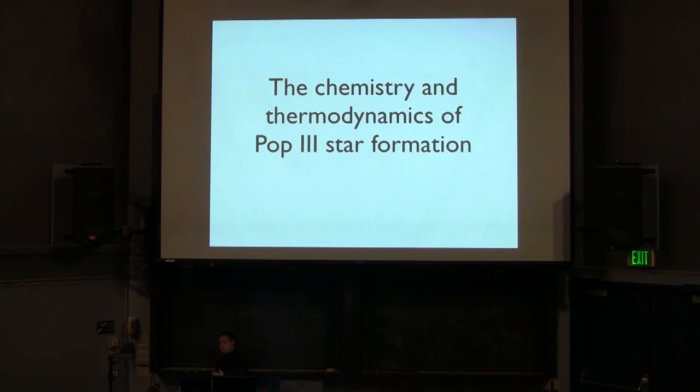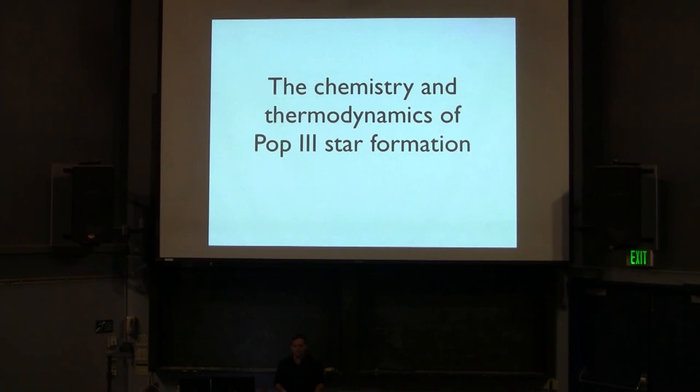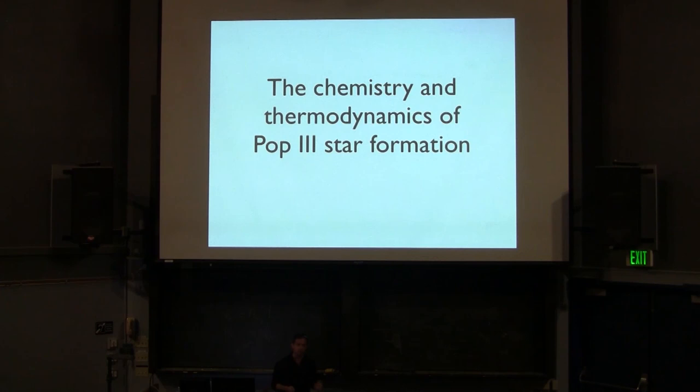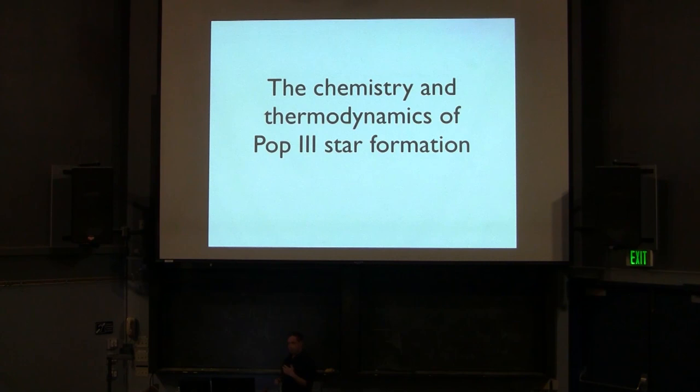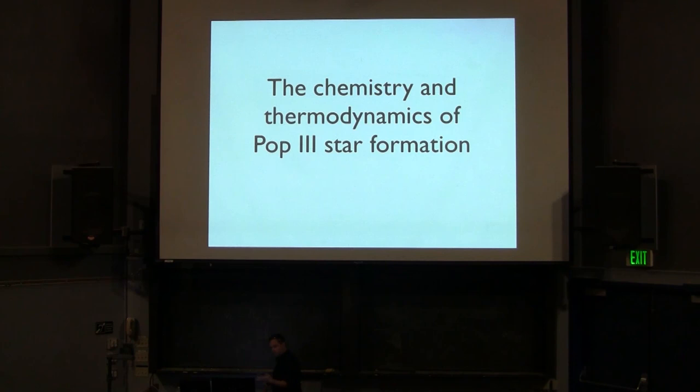Today I was going to talk about Population 3 star formation. I've been talking the last couple of days about chemistry and cooling in the ISM, really highlighting the fact that the chemistry in the ISM isn't really doing much to the cooling — most of the cooling is taken over by C+ and dust. So the chemistry there is more for a diagnostic basis, comparing simulations to observations. Population 3 star formation is a very different regime in which the chemistry matters a lot.